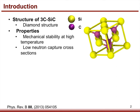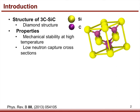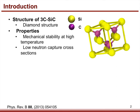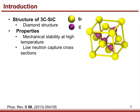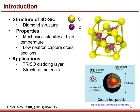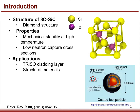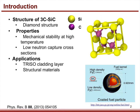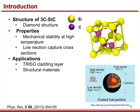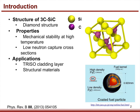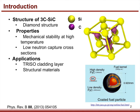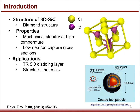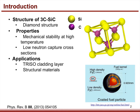Due to its mechanical stability at high temperature and low neutron capture cross-sections, Silicon Carbide has promising nuclear applications. For example, it has been proposed for use as a cladding material in TRISO fuel particles, which can provide a barrier for fission products.